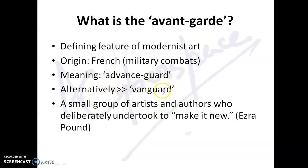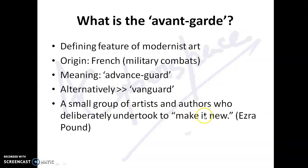Alternatively, we have another term for this in English: vanguard. Vanguard and avant-garde are more or less the same. In the context of modernist literature and modernist art, avant-garde refers to a small group of artists and authors who deliberately undertook to make it new — to use Ezra Pound's famous phrase. Modernism was all about making it new, breaking from tradition, going away from convention. That's why they were the avant-garde, and many people say they were avant-gardists — they deliberately wanted to dissociate themselves from the mainstream.